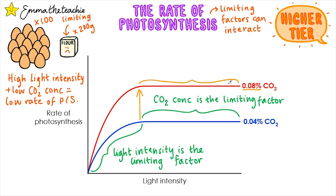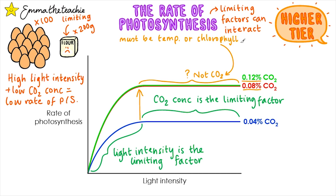Now looking at the plateau when it's 0.08% carbon dioxide — what's the limiting factor here? Well, the truth is we can't work it out unless we do another experiment. If we increase the carbon dioxide concentration again to 0.12%, you can see that the lines on the graph are pretty much the same. That means that increasing the carbon dioxide concentration had no effect on the rate of photosynthesis, so the limiting factor is not carbon dioxide concentration. Therefore, it must either be temperature or chlorophyll. You could do another experiment to find out which.